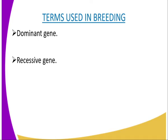Do we have terms used? We have dominant gene. A dominant gene is a superior gene which normally masks the characteristic of the inferior or recessive gene. Also, a dominant gene is the one which normally expresses itself fully, both in homozygous and heterozygous conditions.